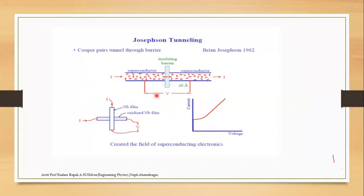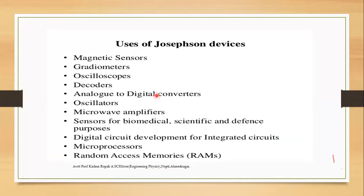The Josephson effect involves DC and AC types. The devices using Josephson junctions are used in magnetic sensors, gradiometers, oscilloscopes, decoders, analog-to-digital converters, oscillators, microwave amplifiers, and sensors for biomedical, scientific, and defense purposes. They are also used in digital circuit development for integrated circuits, microprocessors, and random access memory (RAM).